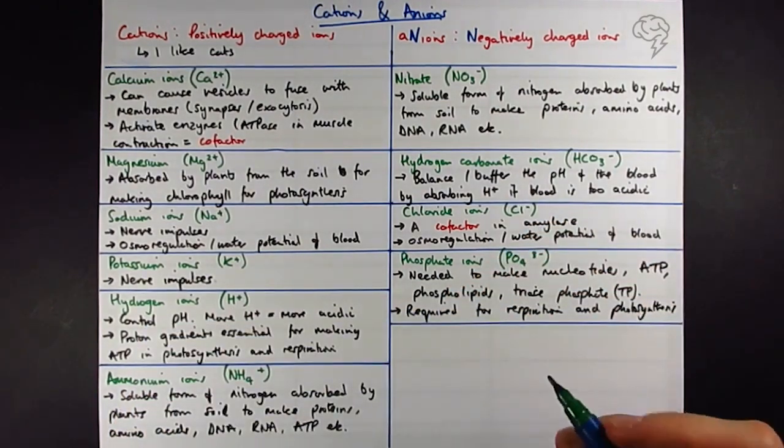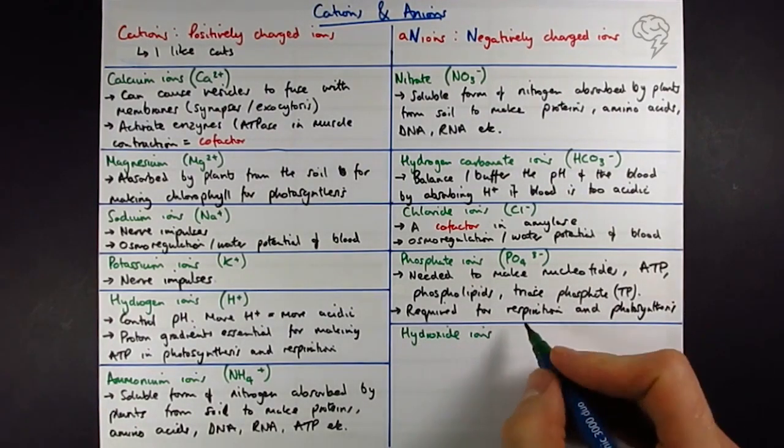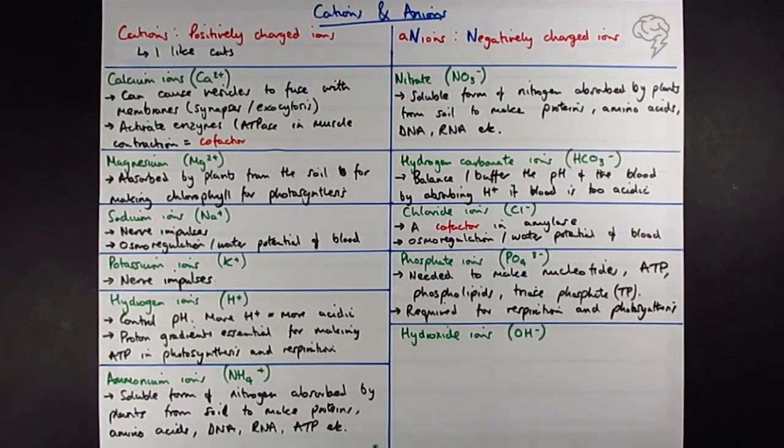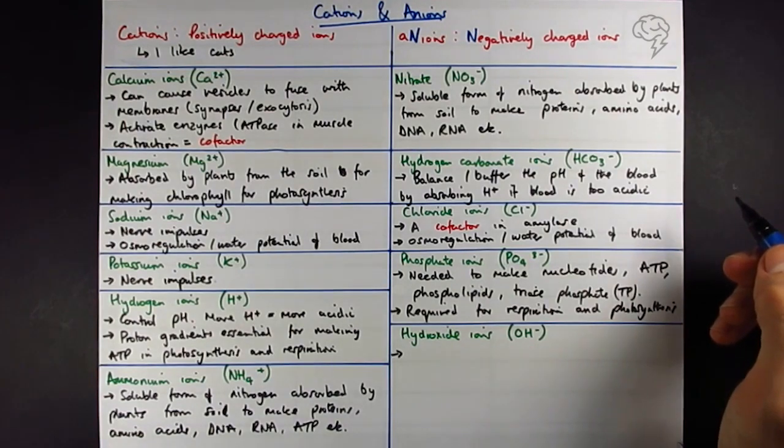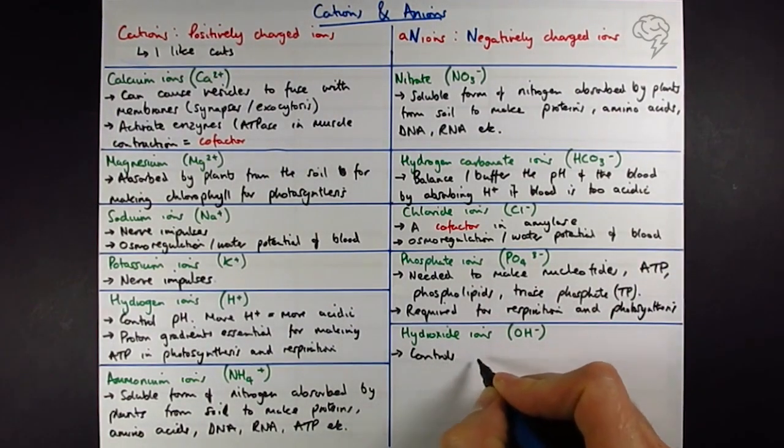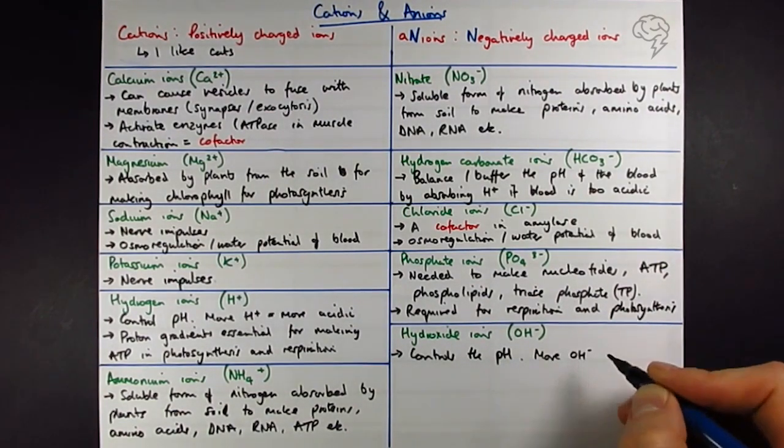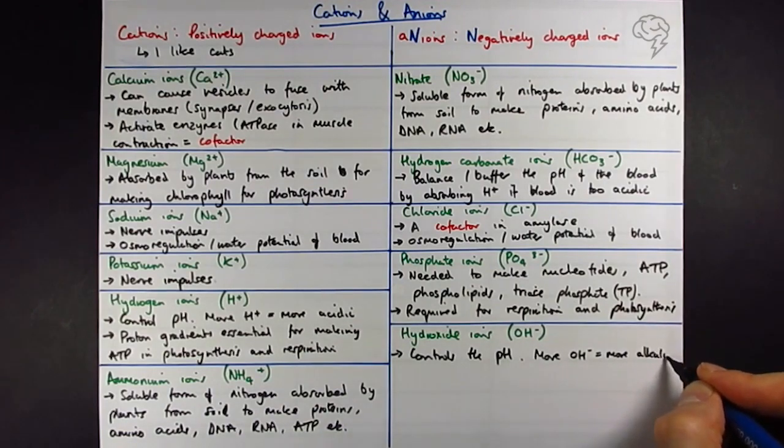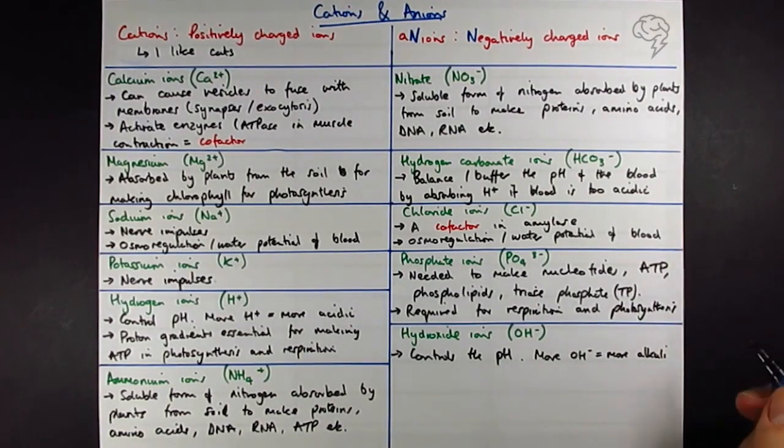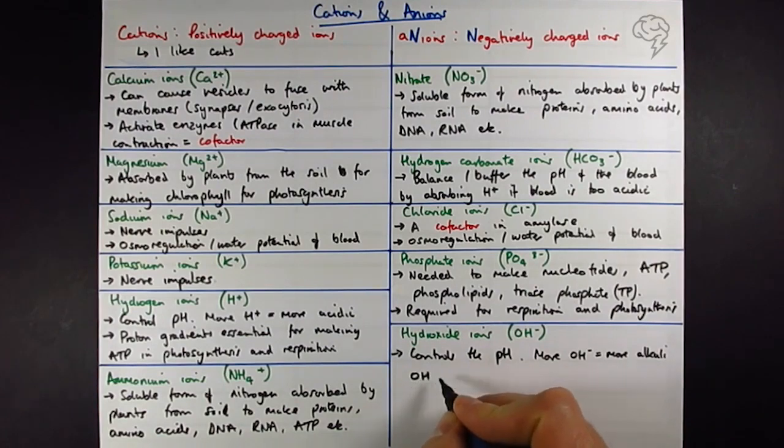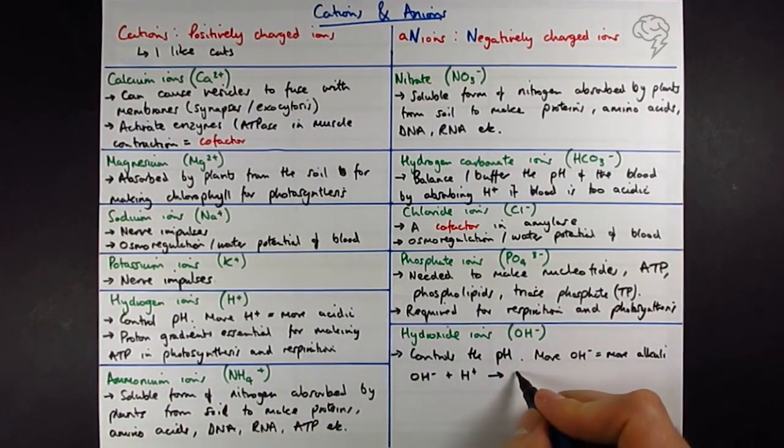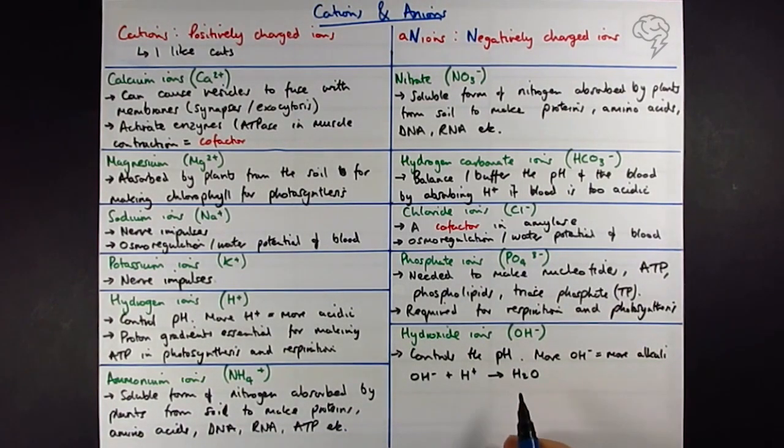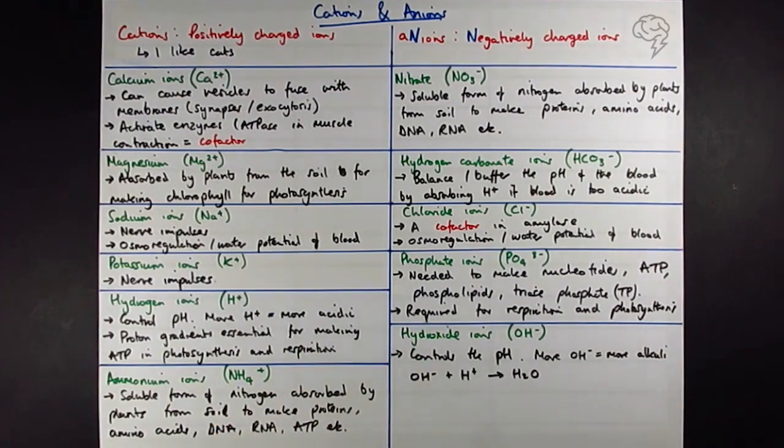And the last ones we need to know about are hydroxide ions, which are OH-. So these also control the pH of things. So the more hydroxide ions, the more negative they are, the more alkali there are. I'm sure there'll be some chemistry students out there saying I shouldn't say alkali. You're probably quite right. But not all biologists have to do chemistry. So I'm not going to be too accurate there. So hydroxide ions, OH-. If we add this onto a proton or hydrogen ion, these are going to neutralize each other and we're going to make water. So these guys can be used to balance out too many hydrogen ions in the blood and vice versa.